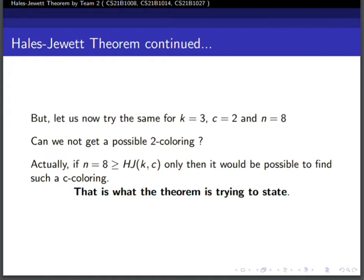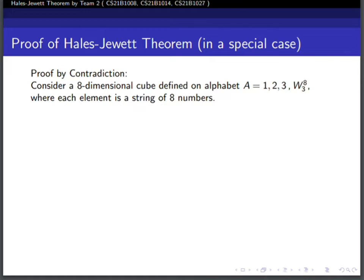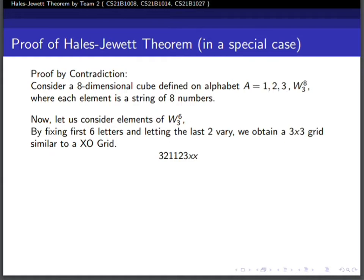Now let me prove the Hales-Jewett theorem in the case where k=3, c=2, and n=8. Imagine an 8-dimensional hypercube where each element is a string of 8 numbers from 1 to 3. The idea is to reduce this to simpler versions. I will color each point with red or blue, then prove by contradiction that there does not exist any monochromatic combinatorial line.